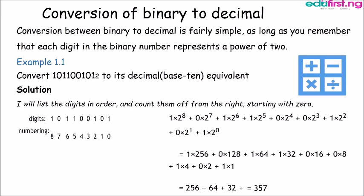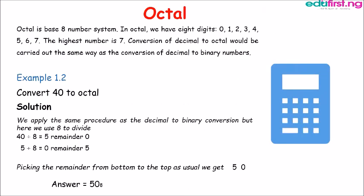Now we move to the octal. Octal is base 8 number system. In octal we have 8 digits: 0, 1, 2, 3 through to 7. The highest number here is 7. Conversion of decimal to octal would be carried out the same way as the conversion of decimal to binary numbers.